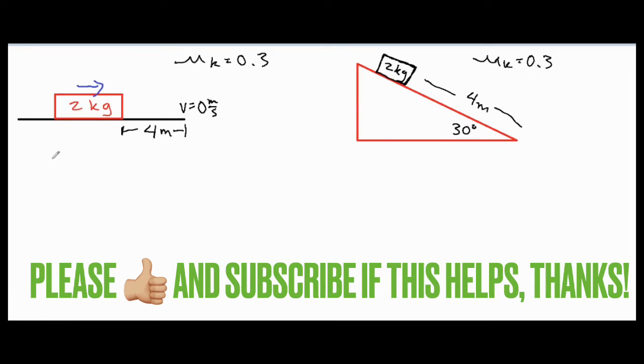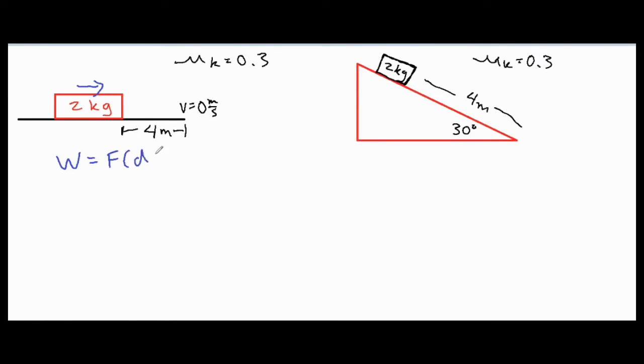We can use two different methods. The most common method would be using force times distance times the cosine of theta. In this one we don't have any angles involved, so we can do work equals force times distance. Our force that is being applied over that distance is the force of friction.